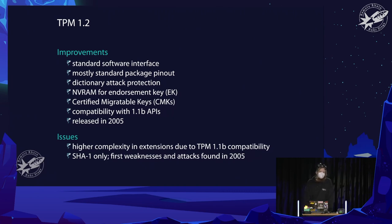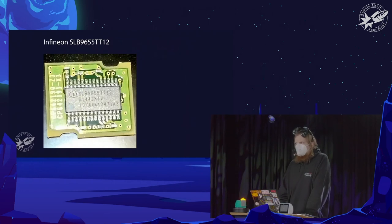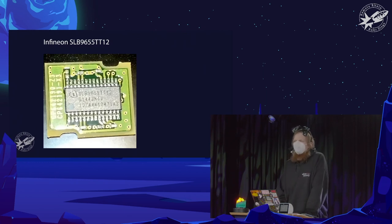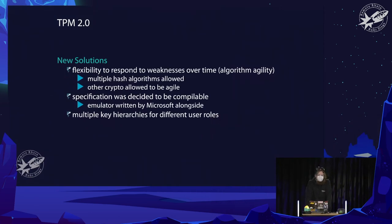2005 also brought concerning news: the SHA-1 algorithm used for hashing was already facing its first attacks. The problem was the specification used a fixed algorithm — not a good choice but there wasn't much to choose from back then. Here's an example image of a TPM 1.2 chip I found on one of my machines bought used about 10 years ago. You can still buy machines today with these chips.